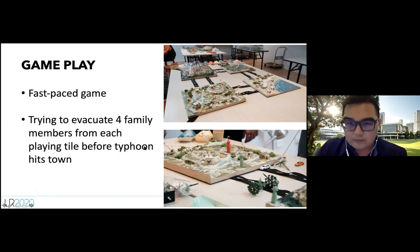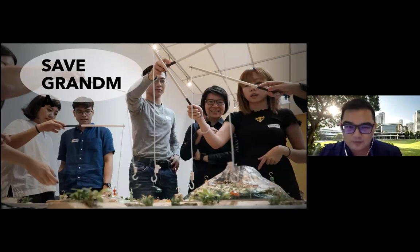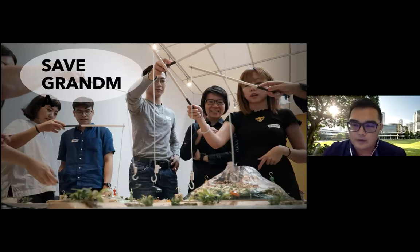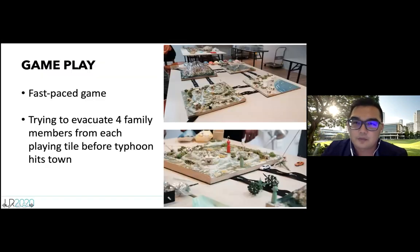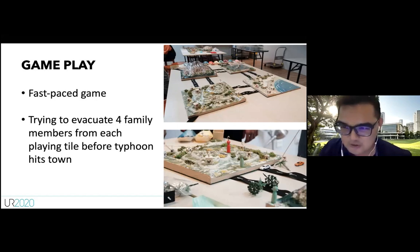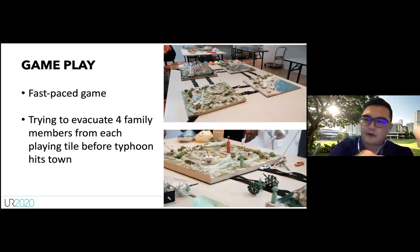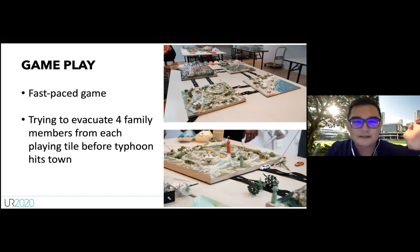Families use physical hooks to fish their family member tokens off each tile — this adds a physical challenge. A key rule is that each road can only be used by one car at a time, which inevitably creates a massive traffic jam — mirroring real disaster scenarios. As the typhoon advances, certain towns get flooded and become inaccessible, forcing families to decide whether to rescue a stranded member first or go for others.